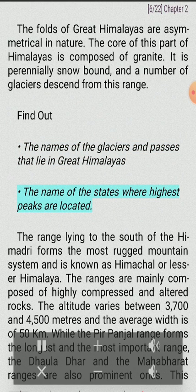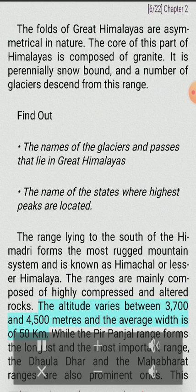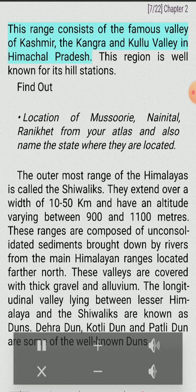The range lying to the south of the Himadri forms the most rugged mountain system and is known as Himachal or Lesser Himalaya. The ranges are mainly composed of highly compressed and altered rocks. The altitude varies between 3,700 and 4,500 meters and the average width is 50 kilometers. The Pir-Panjal range forms the longest and most important range, while the Dhaola Dhar and the Mahabharat ranges are also prominent. This range consists of the famous Valley of Kashmir, the Kangra and Kulu Valleys in Himachal Pradesh, and is well known for its hill stations.